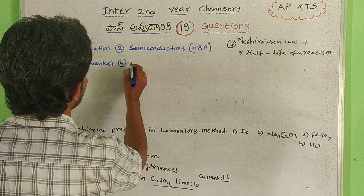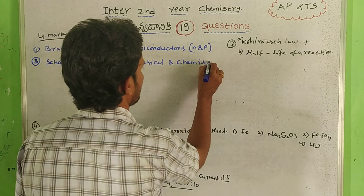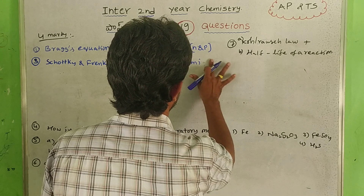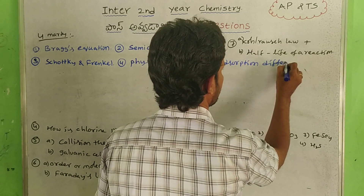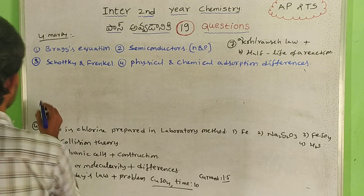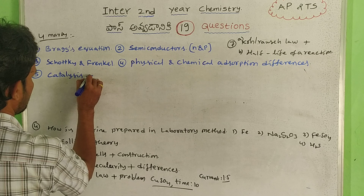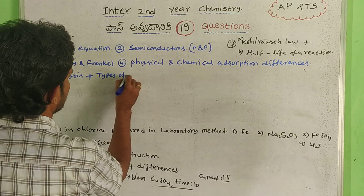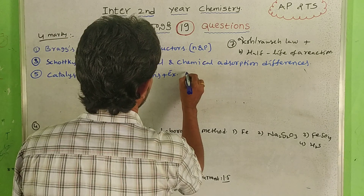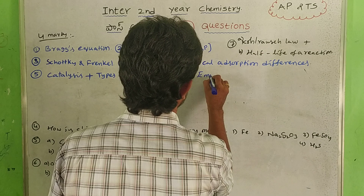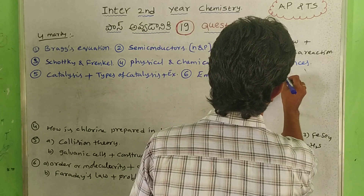In surface chemistry: physical and chemical adsorption — differences. Next: catalysis — types of catalysts plus examples. Emulsion — definition and types of emulsion.